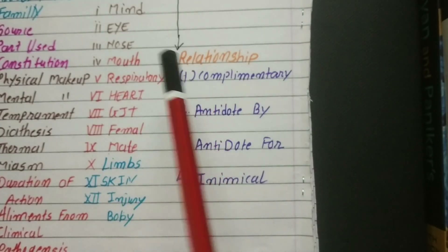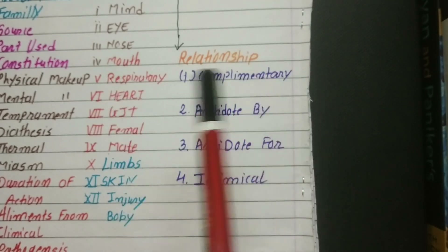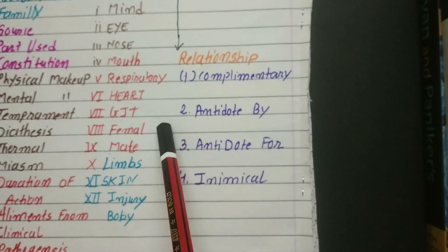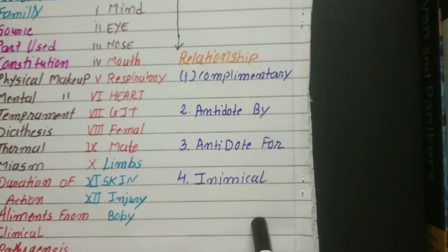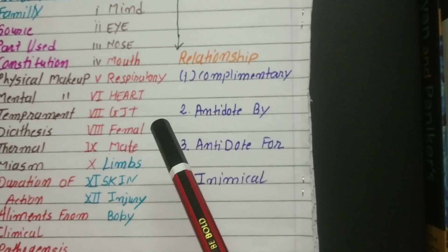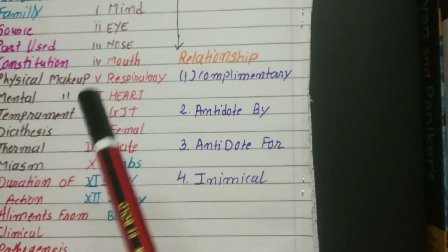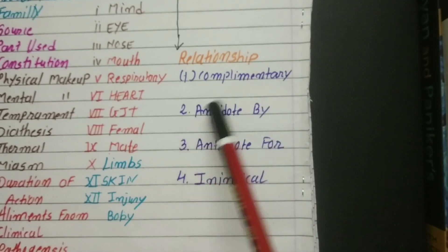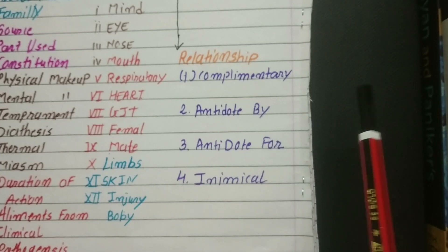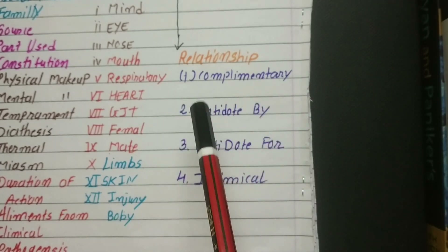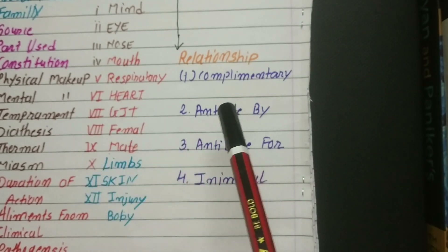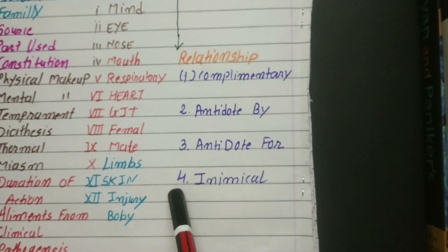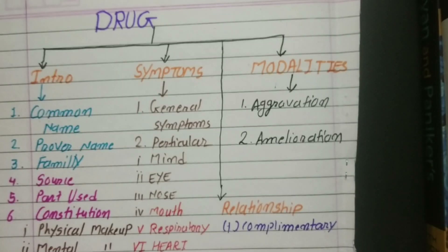And finally, you have to write the relationship between remedies. This relationship is not between girls and boys — it is the relationship between drugs. First comes complementary — a particular drug that complements another drug, having similar symptoms. Then antidoted by — some drug that antidotes our main drug, meaning it removes its symptoms from the body. Then antidoted for — meaning our drug becomes an antidote for another drug. And the last one is inimical.